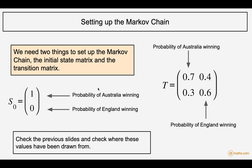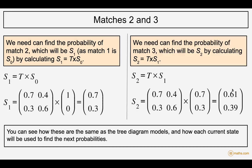For the Markov chain, we have the initial state matrix, which gives the probability of Australia winning the match and the probability of England winning the match. Australia won and England didn't. We put the probability of Australia winning the next game as 0.7 and England winning 0.3. The probability of Australia winning given England won is 0.4, and England winning 0.6.